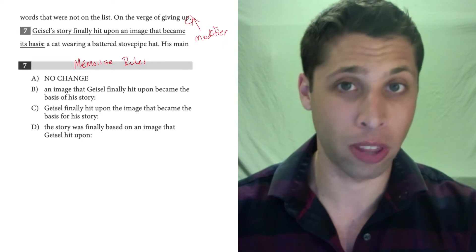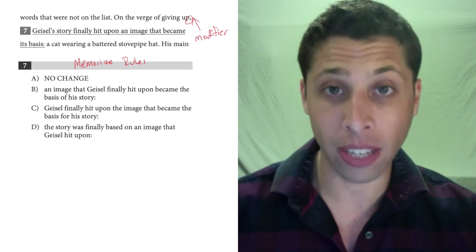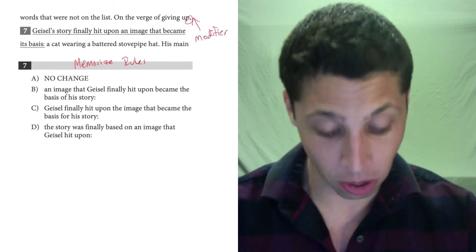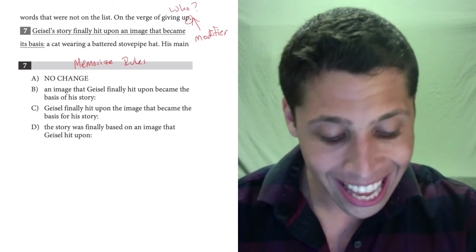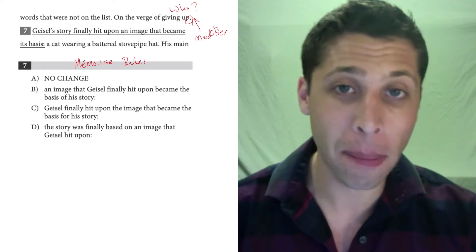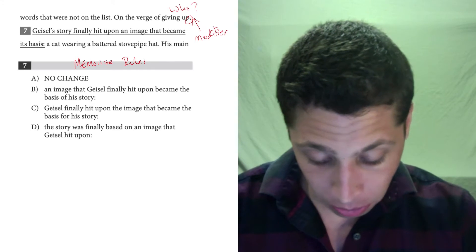So the way I apply the grammar rule here is I just kind of turn the first thing into a question. So in this case, it says on the verge of giving up. So who was on the verge of giving up? That would be my question, and the first thing after this comma has to answer that question. So who? Well, Geisel. Okay, fine.